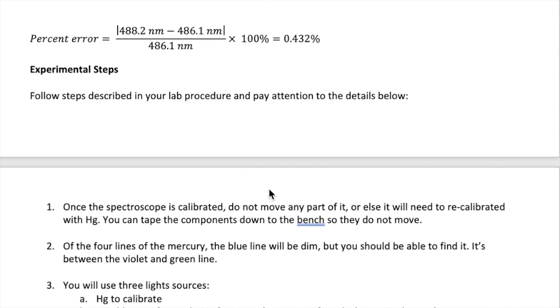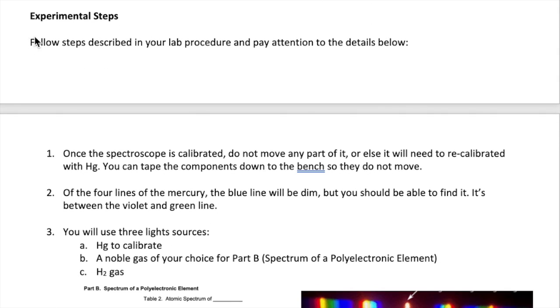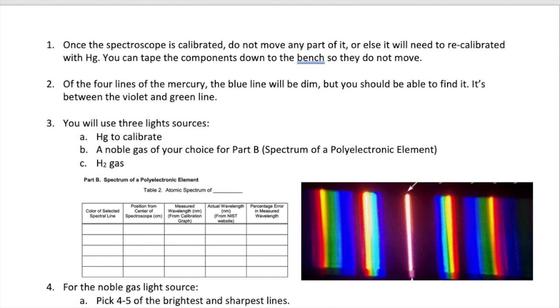Let's now talk about the experimental steps. You can follow the steps in the lab procedure, but keep the following in mind. Once you calibrate the spectroscope, you shouldn't move any part of it or you'll need to recalibrate it. You can use tape to prevent the different parts from moving. When you look at the mercury lines, the blue lines will often be hard to observe. But keep in mind that it should be between the violet and the green lines.